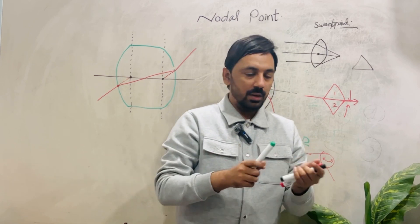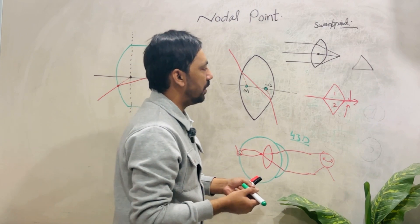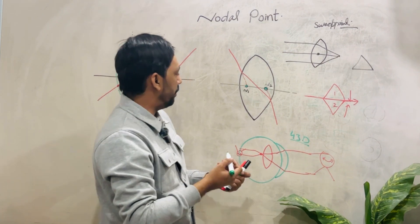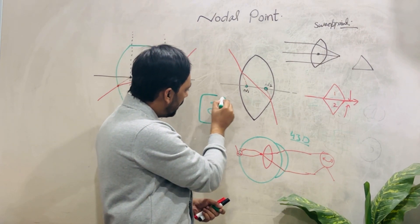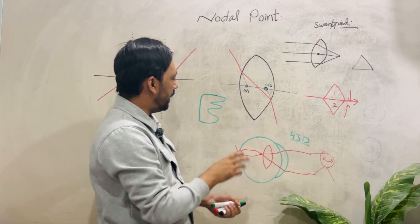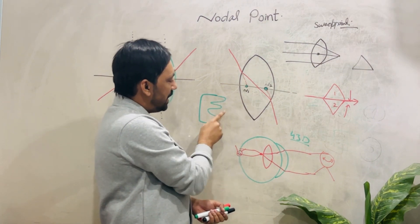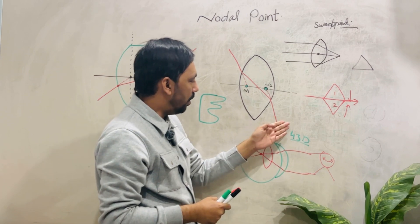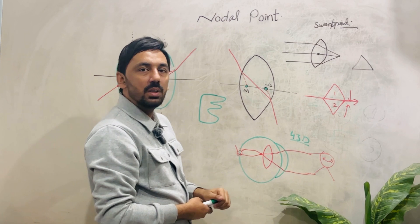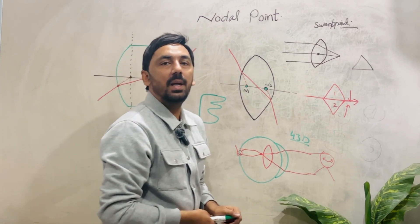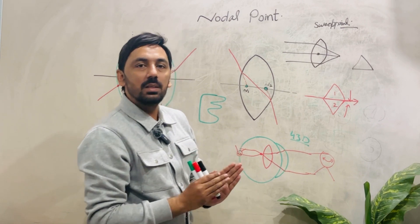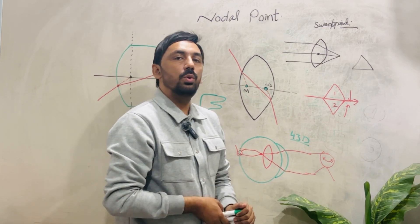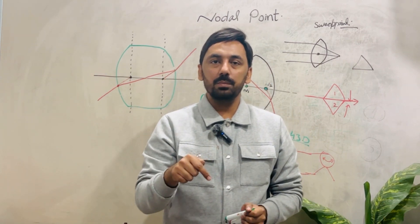What is the clinical importance of the nodal points? When recording the visual acuity of a patient, we use charts like the Snellen chart or logMAR chart, and the letters on these charts are called optotypes — for example, the large E is the first letter on the Snellen chart. When a patient looks at an optotype, light rays from it enter the eye and make an angle at the nodal point. These angles are measured in minutes of arc. For more on the concept of minutes of arc, watch the linked video in the description.